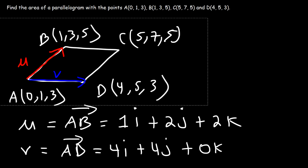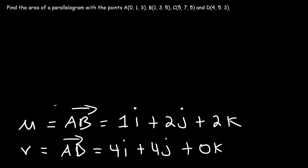So once we have these two vectors, now we could find the cross product of vectors u and v. So what we need to do is create a 3 by 3 matrix. First, we're going to write the letters i, j, k. And the first vector that we have is vector u, because the order matters.